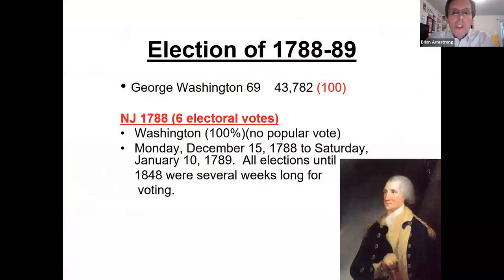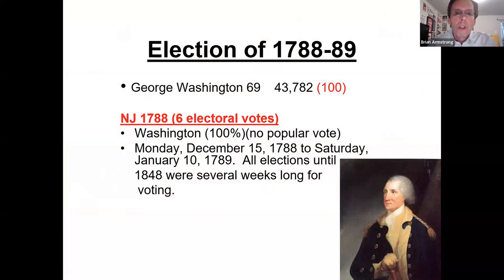Going through the elections, I'll start with the first — George Washington's. One interesting thing is that a lot of people say they want elections to take place on one day, but the first election took place from December 15th to January 10th — that's how long it took for people to vote in that era. And interestingly, George Washington got all the votes.